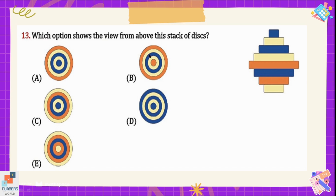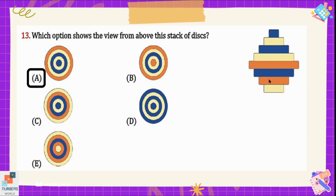Question number 13: which option shows the view from above the stack of disks? If somebody is looking at the stack of disks from the top, we will look at the orange circle, then skin circle, then blue, skin and blue again. So option A is the correct representation here.